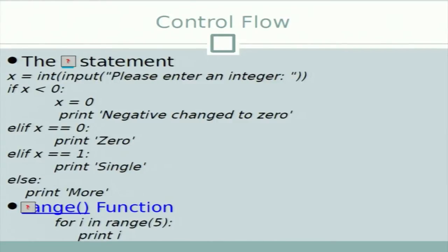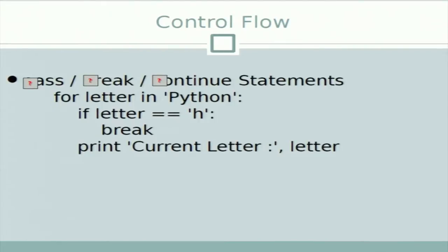There are pass, break, and continue statements. For example, 'for letter in "python"' — if the letter equals 'h' we break out of the loop. So it will loop through the individual letters: first 'p', then 'y', and when the letter becomes 'h' it breaks, so it only prints 'p' and 'y'.